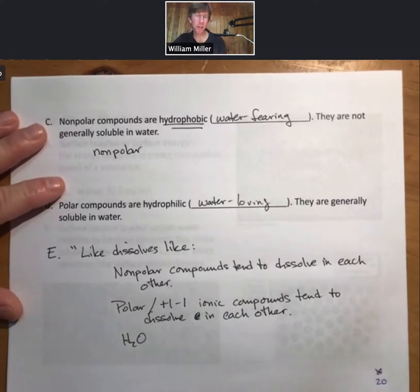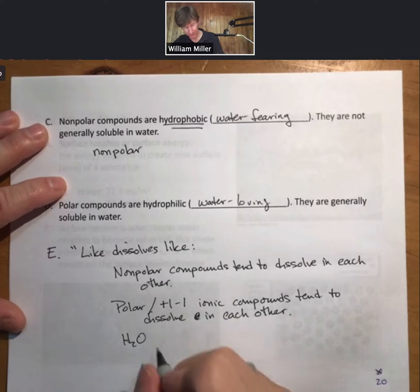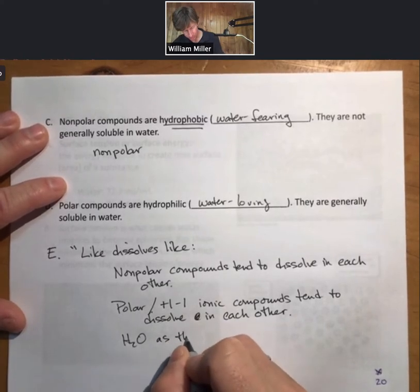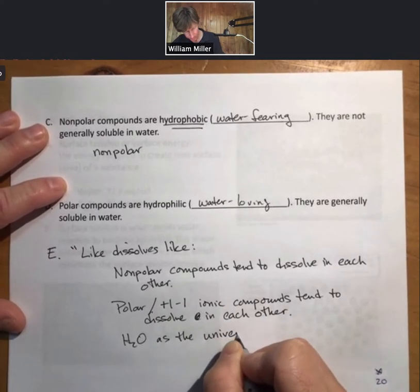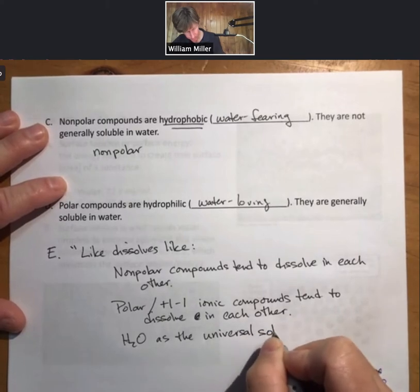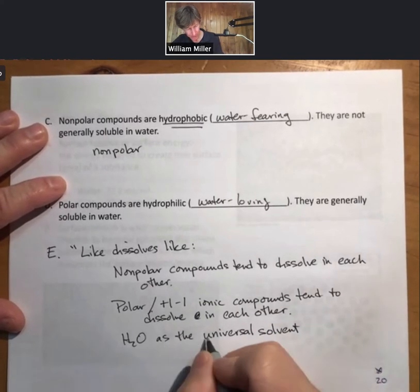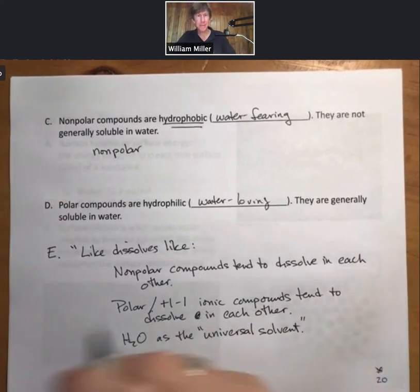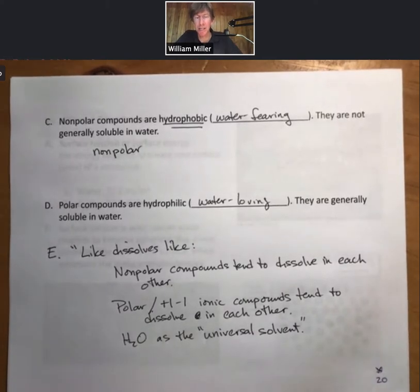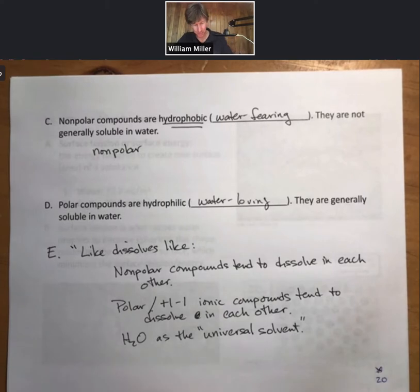Polar and plus 1, minus 1 ionic compounds tend to dissolve in each other, too. If you've ever heard of water as the universal solvent, it is not universal, but it refers to the fact that a great many things dissolve in water. Non-polar things do not. And plus 2, minus 2, plus 3, minus 3 ionic compounds do not. But most often, those are not the things we're interested in.